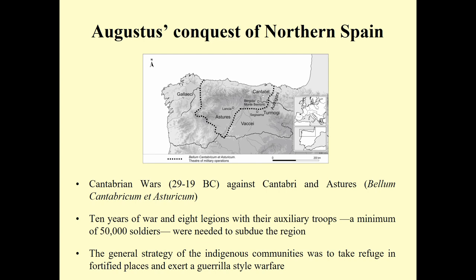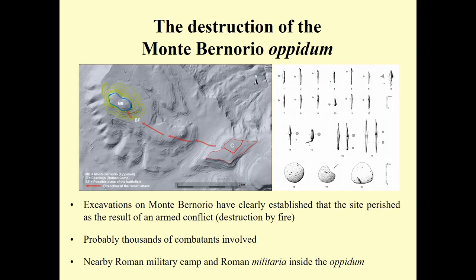We see a similar scenario in northern Spain during Augustus' conquest, one generation after Caesar. The so-called Cantabrian Wars between 29 and 19 BC saw Augustus — who had just come to power in Rome — launch an offensive to conquer these last free populations. It was supposed to be a triumphal campaign, but ended up requiring a major effort of 10 years and eight legions with auxiliary troops — a minimum of 50,000 soldiers — to control the region. The general strategy of indigenous communities was to take refuge in high places and exert a kind of guerrilla-style warfare against Roman power. Archaeologically, we now know that numerous indigenous settlements were violently destroyed, based on new research from the last 20 years.